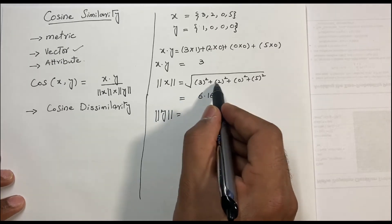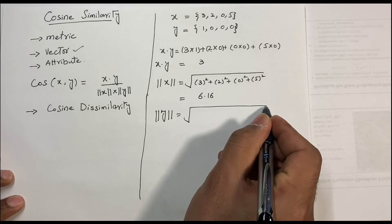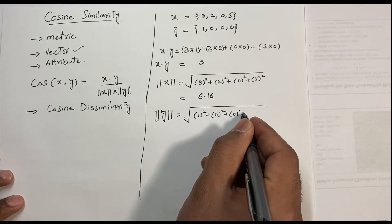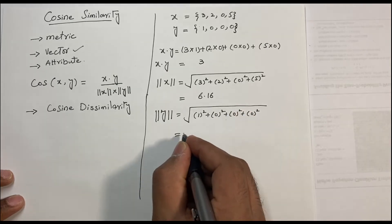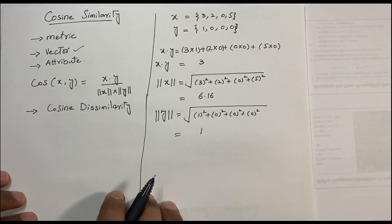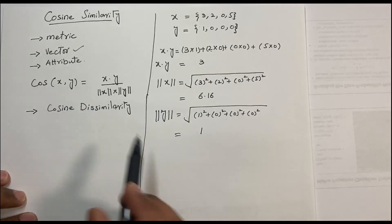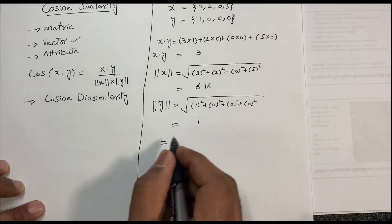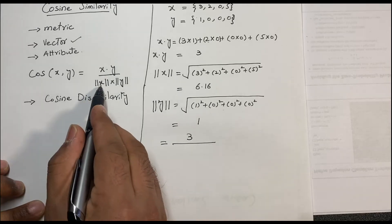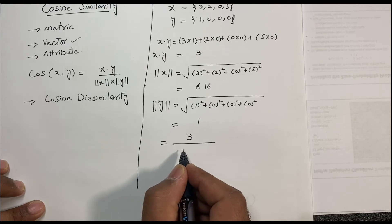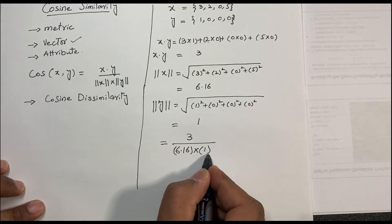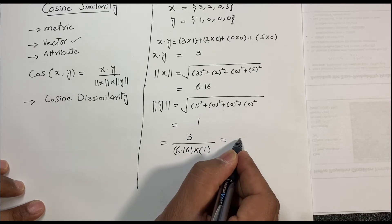Now we find the length of y using the same process: 1² + 0² + 0² + 0² + 0². All values are zero except the first, so the square root of 1 is 1. Putting these values into the formula: x·y = 3 divided by ||x|| = 6.16 multiplied by ||y|| = 1. The answer is 0.49.